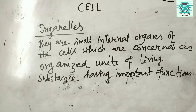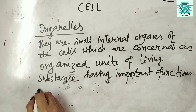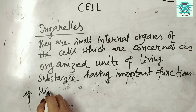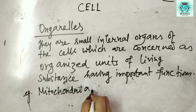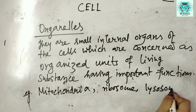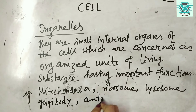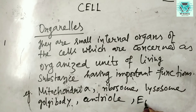Organelles of eukaryotic cells are always membranous. They are the small internal organs of the cells, concerned as organized units of living substance having important functions. The organelles include mitochondria, ribosomes, lysosomes, Golgi body, centrioles, and endoplasmic reticulum, etc.